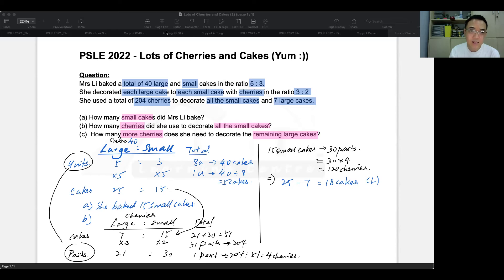So to do that, I will take the total number of large cakes, which is 25 large, and I will subtract away the seven that have already been decorated. So now I'm going to take 25, minus seven to get 18 cakes that have not been decorated. These are the large cakes. Now, for every cake, they are using three parts to decorate. And since one cake requires three parts, 18 cakes should be 18 times 3.